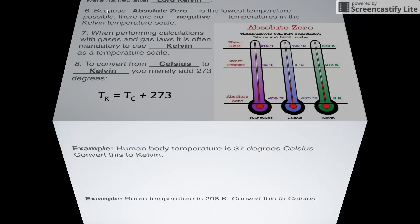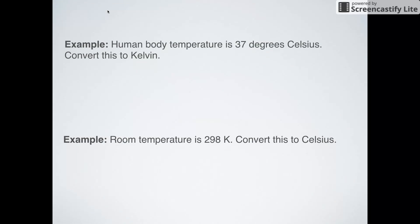Let's take a look at two simple examples. Human body temperature, 37 degrees Celsius. I want to convert that to Kelvin. All I've got to do is add 273 degrees. So by adding 273, I get 310 K.